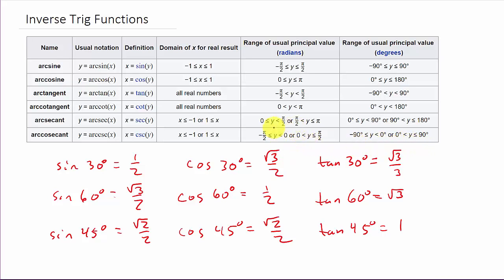Secant is like cosine — 0 to π — but it's split because we can't be at π/2. Remember, secant is 1 over cosine, and cosine of π/2 is zero, so that would give a zero in the denominator. That's why we leave out π/2. The same reasoning applies to arccosecant, where we leave out zero. You've got to know these ranges, and you also need to know all the special angles — you just need to memorize them.